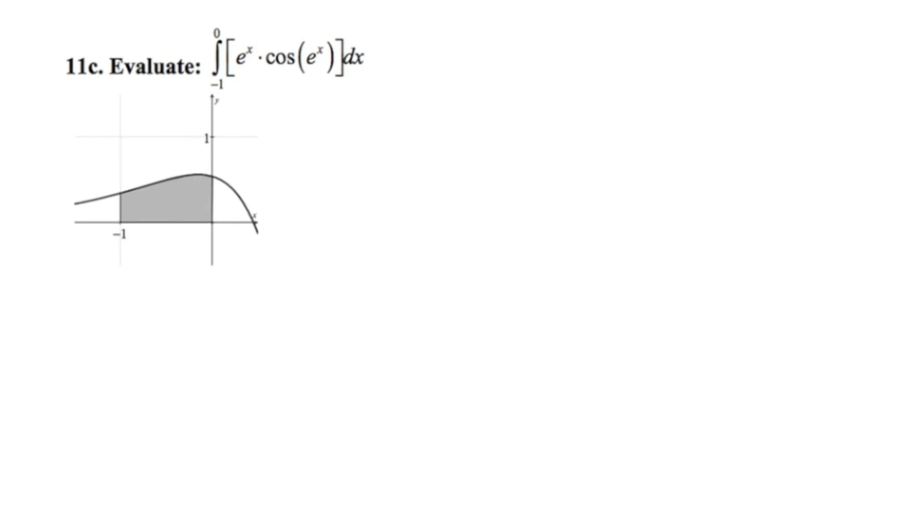In our next example, we're supposed to find the area under the curve of e to the x times cosine of e to the x from negative 1 to 0. So once again, our power of e is x.